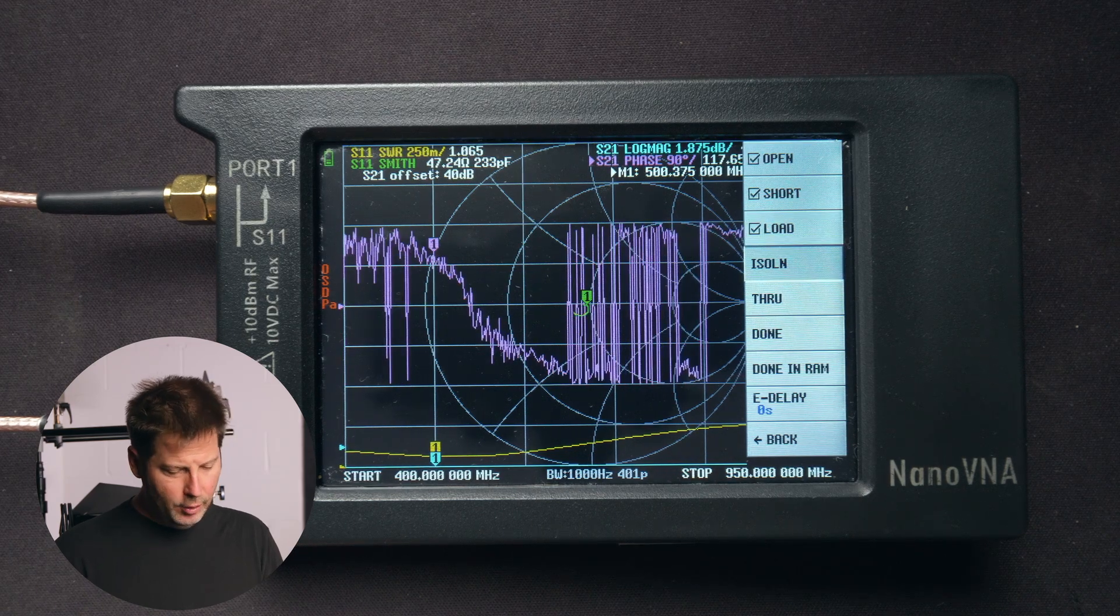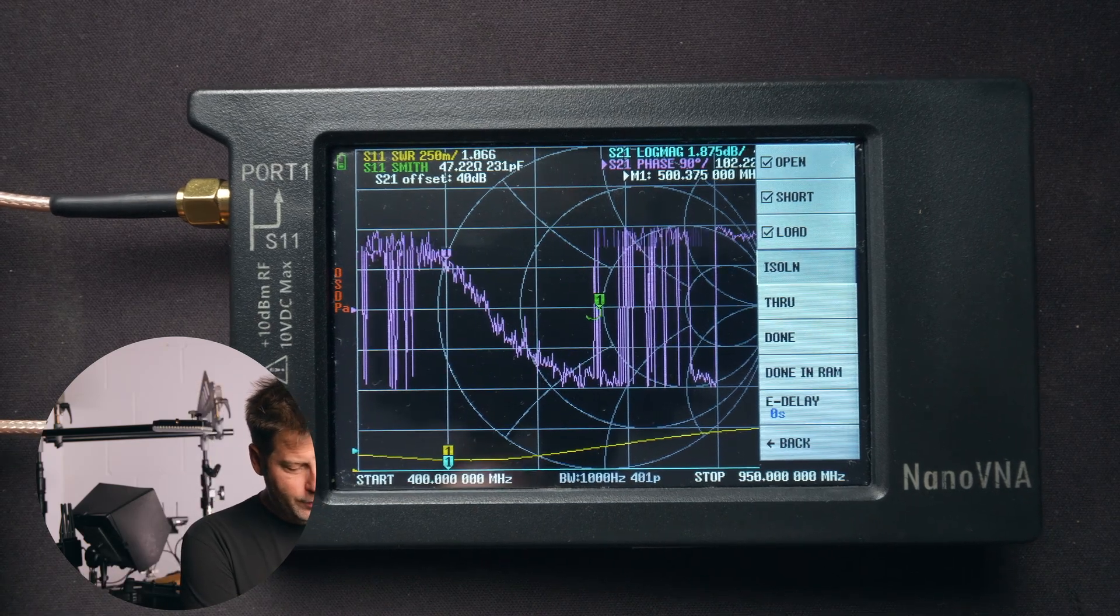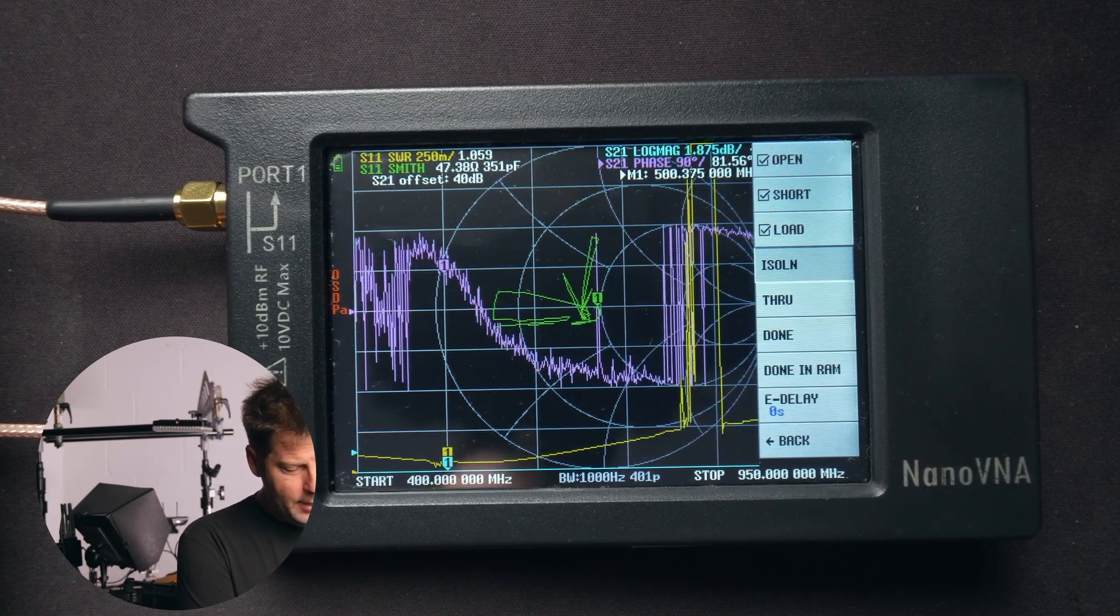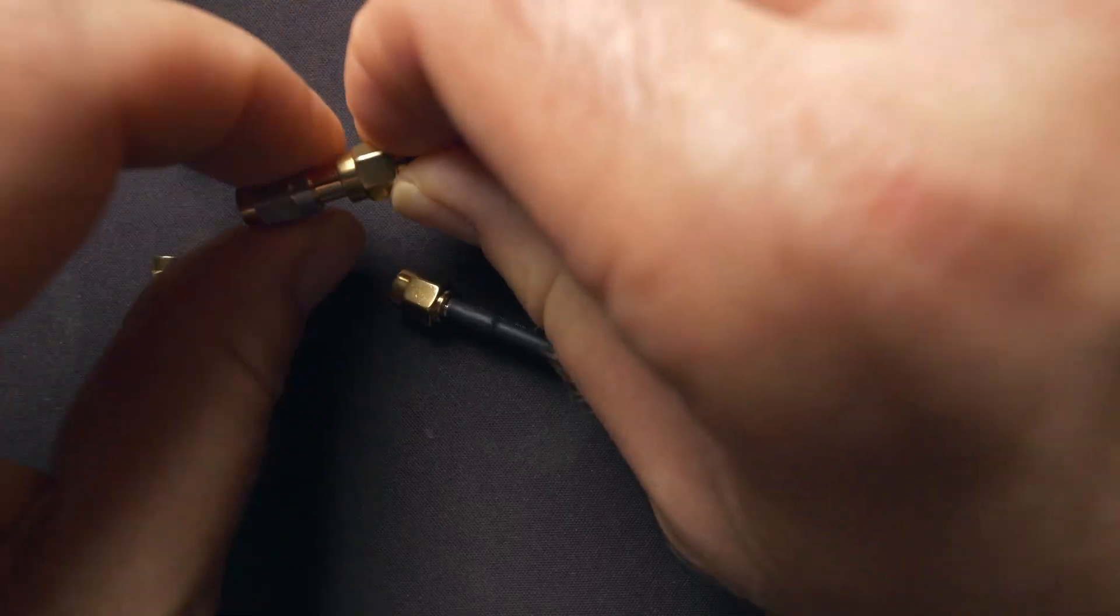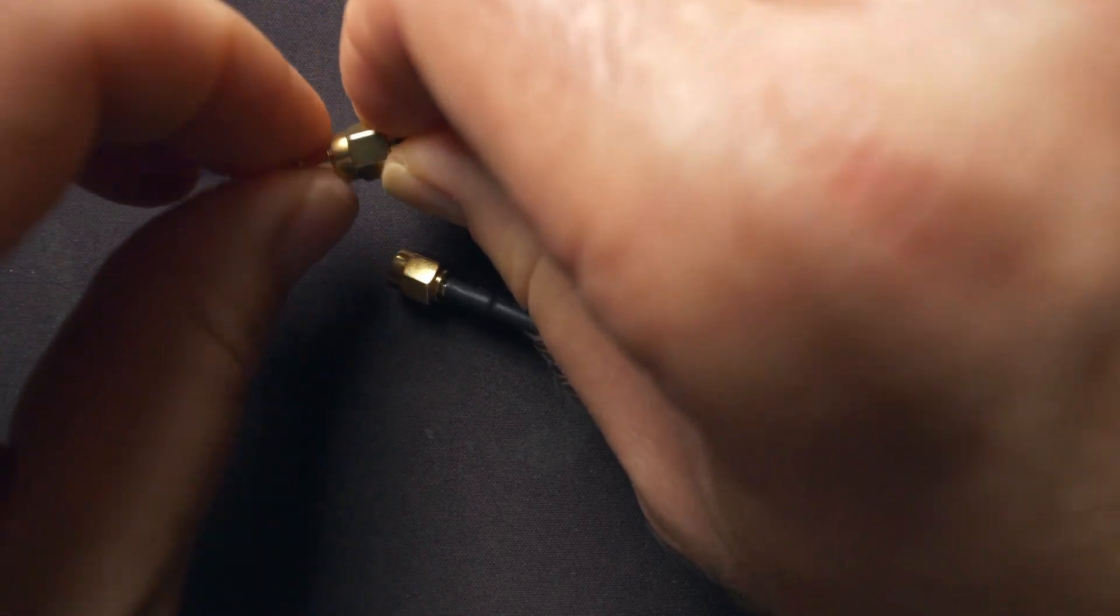After load, now we have to do the isolation calibration. For this one, we're going to remove the 50-ohm load and the SMA barrel and attach that to port S21. So let's go ahead and do that.